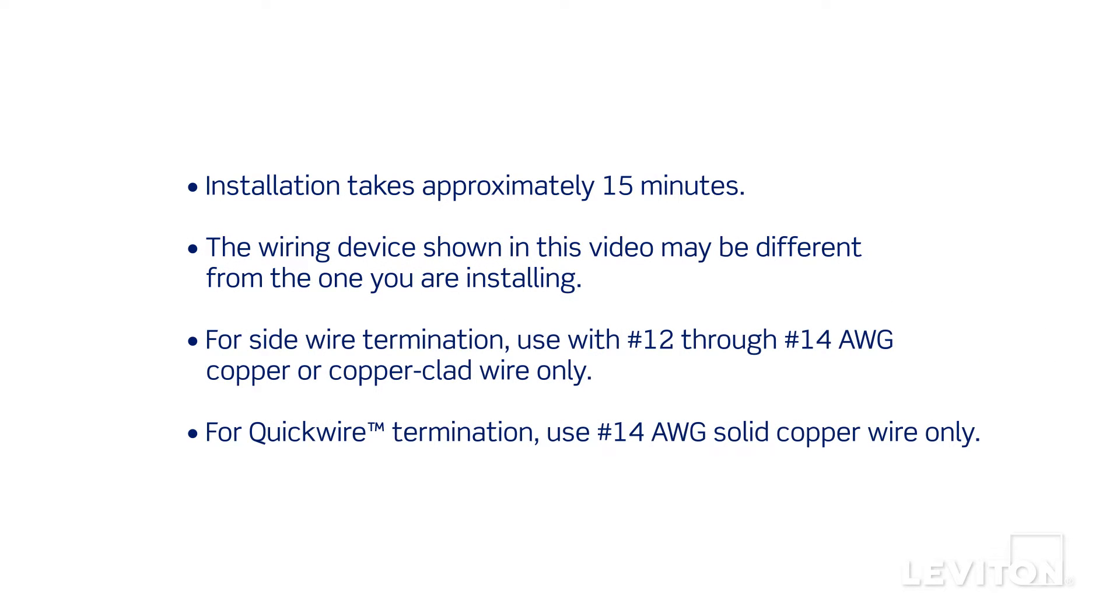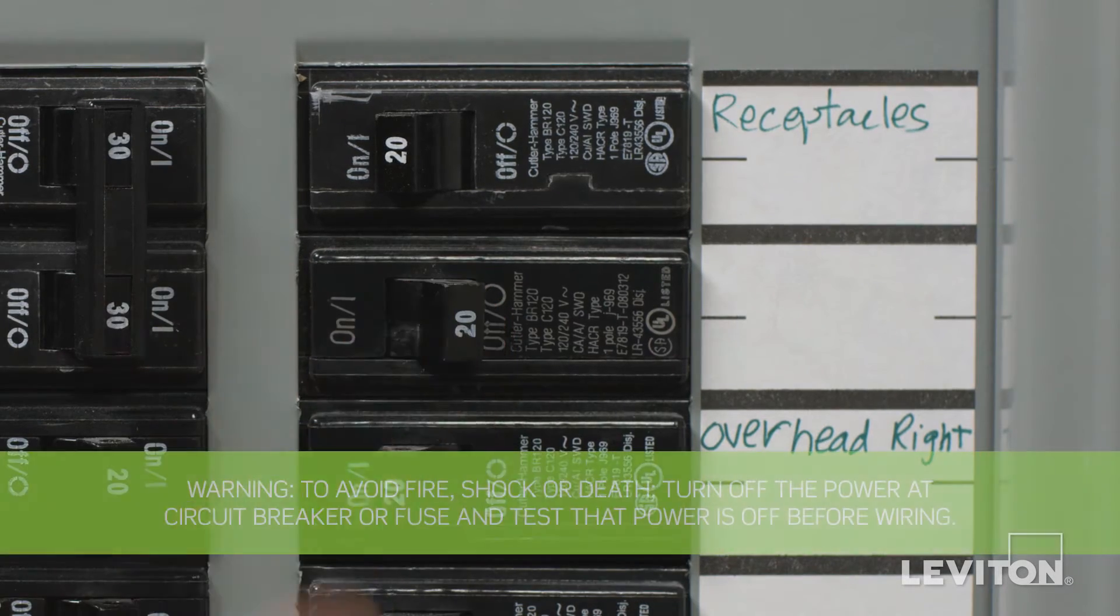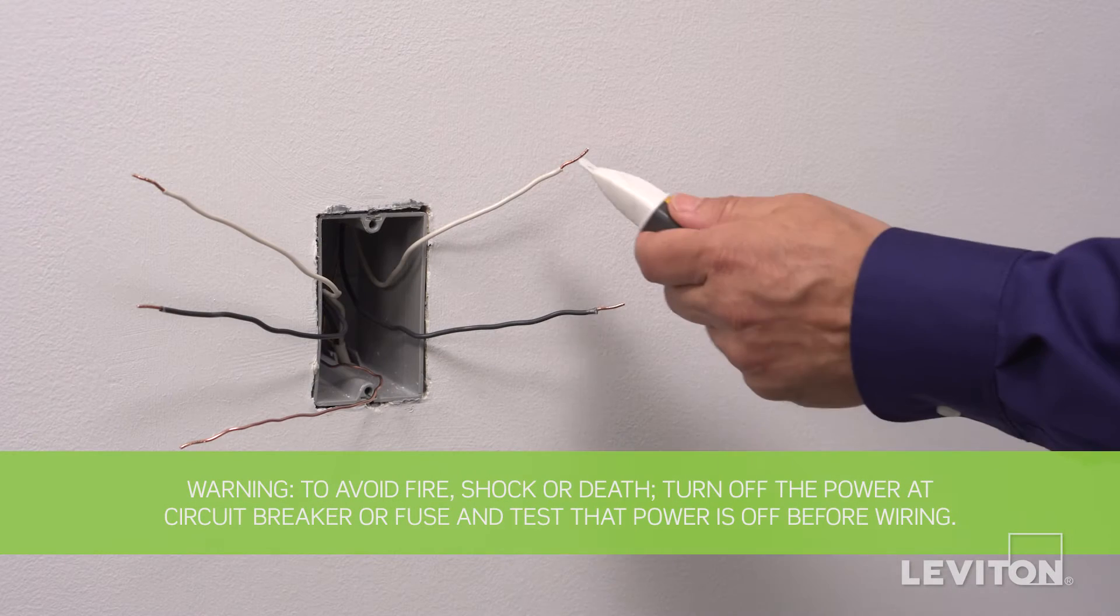This installation takes approximately 15 minutes. The process shown follows general guidelines. Local codes take precedence. Be sure to turn the power off at the circuit breaker and use a voltage tester to ensure that the power is completely off.